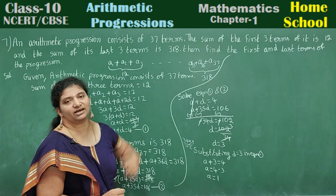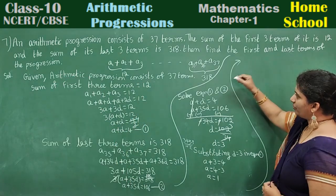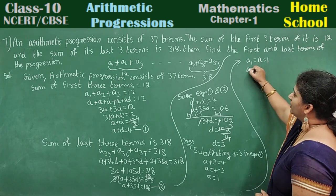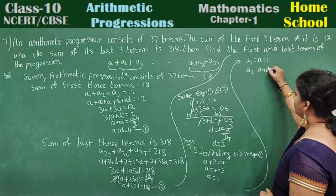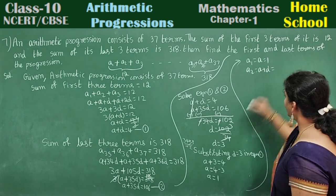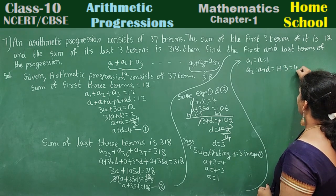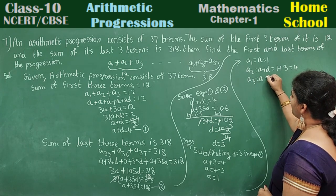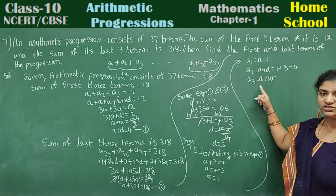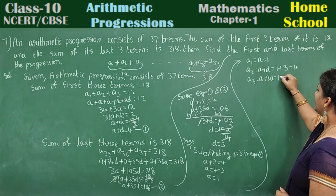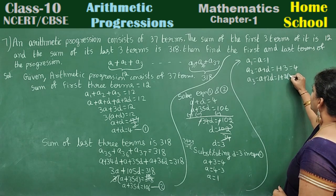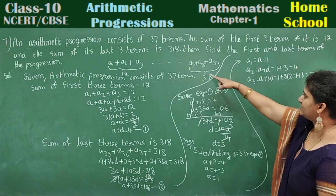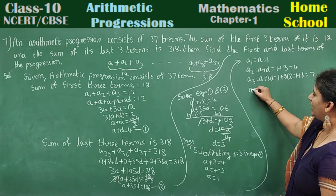Now find the required terms. First term a1 equals a equals 1. Second term a2, general form a plus d: 1 plus 3 equals 4. Third term a3, general form a plus 2d: 1 plus 2 times 3 equals 1 plus 6 equals 7. Next, a36, general form a plus 35d: 1 plus 35 times 3.